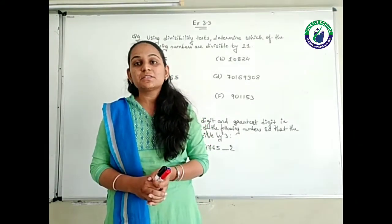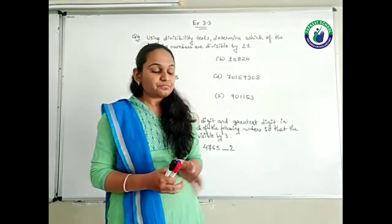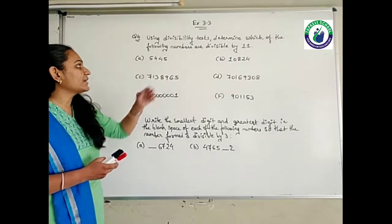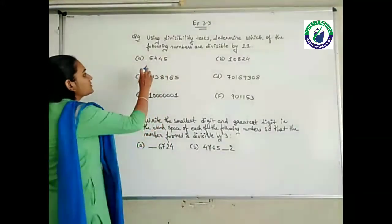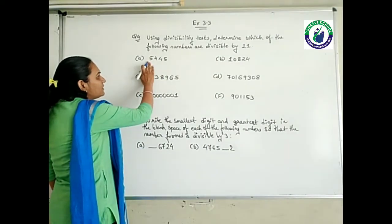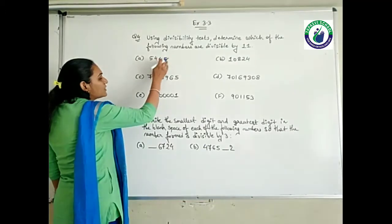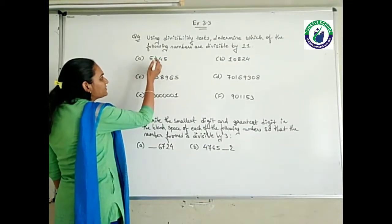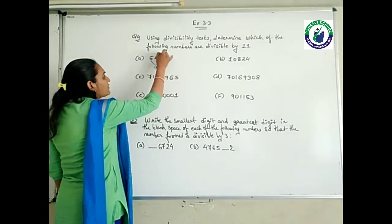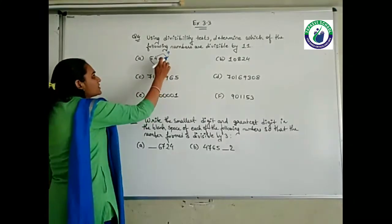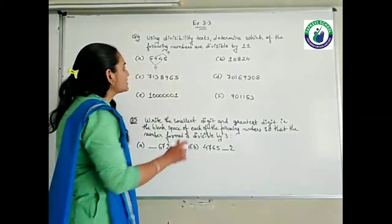What is the rule of 11? You have to add the digits which are at the odd places and add the digits which are at the even places. Their difference should be either 0 or it should be divisible by 11. Then and then the number is divisible by 11. First number is 5445. The digits at odd places sum to 9, and even places sum to 9. The difference is 0 — so yes, this number is divisible by 11.